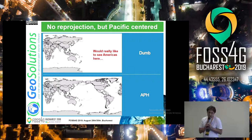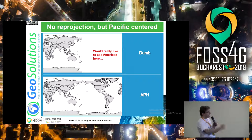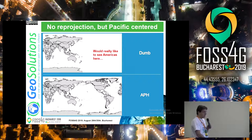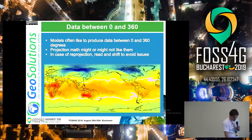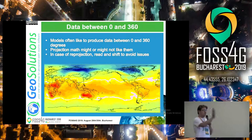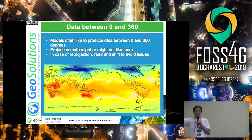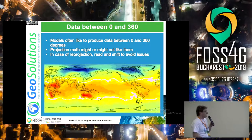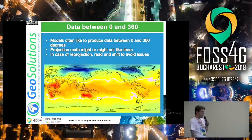If I just want to center on the Pacific, without APH I get only half of the map I wanted. I have to replicate the rest of the data on the other side of the dateline, which APH does. There are also hard data cases, like many meteorological datasets delivered not between -180 and 180, but between 0 and 360. We have to teach the software to do multiple reads and stitch things together.